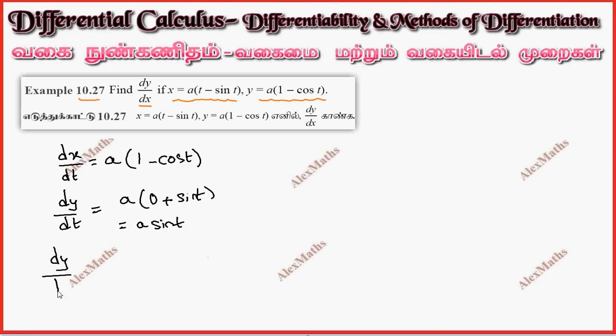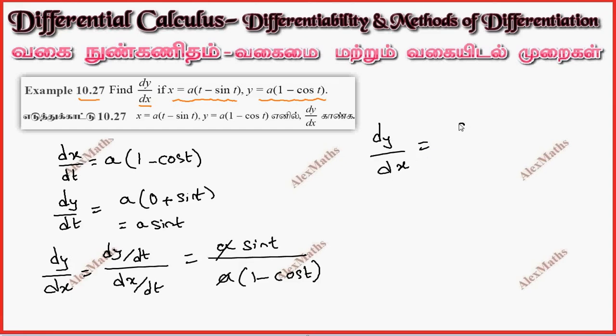dy by dx equals dy by dt divided by dx by dt. This is a sin t divided by a times (1 minus cos t). a cancels, so dy by dx equals sin t divided by 1 minus cos t.